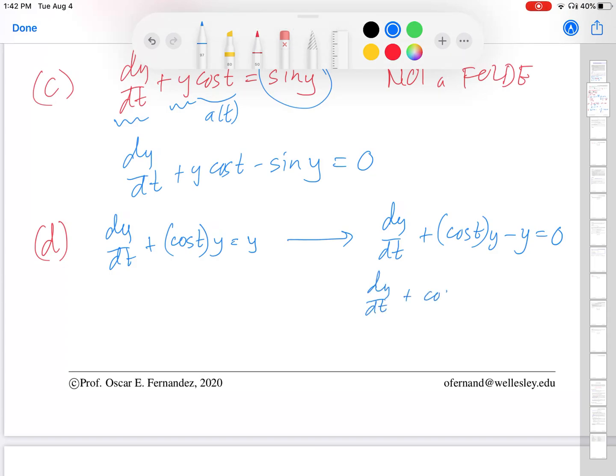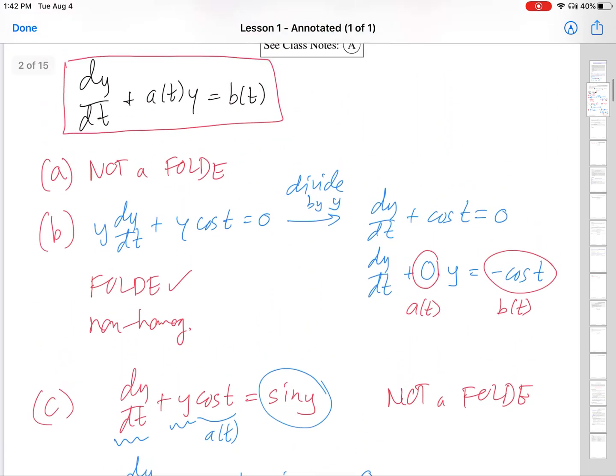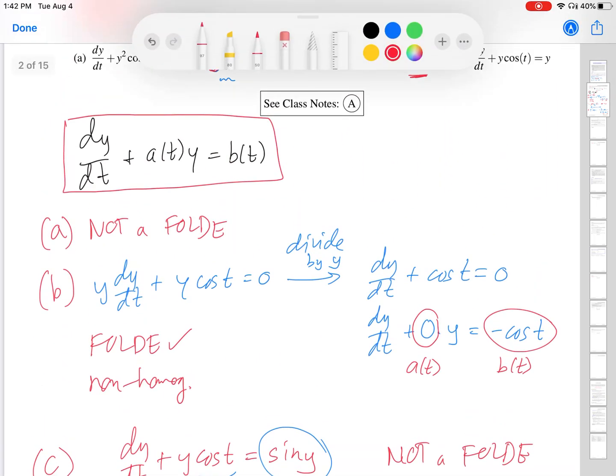And then, to simplify that even more, to help us classify this ODE, I will factor out a Y. So, at this point, we can identify this thing as A of T. We can identify that as B of T. And we see that, indeed, this is only a function of T. This is only a function of T. In particular, it's the 0 function. And then, if we go back to our standard form, it does, in fact, match our standard form up here of a linear ODE. And the last thing, therefore, we have to figure out, now that we know that this is linear, is whether it's homogeneous or not.